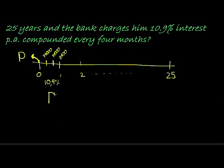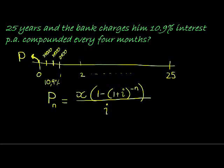We know that the formula we must work with is x times (1 minus (1 plus i) to the power of negative n) divided by i.